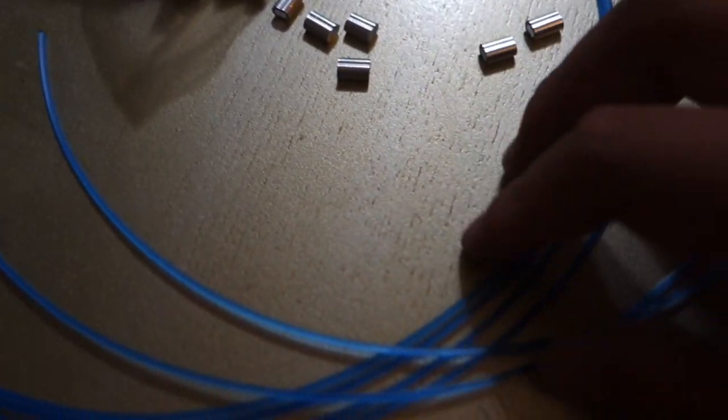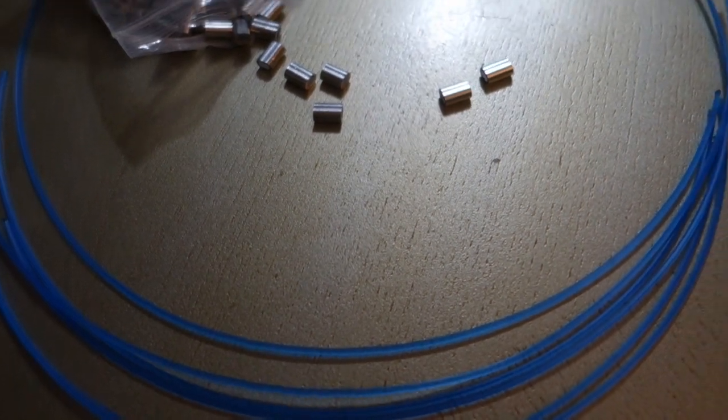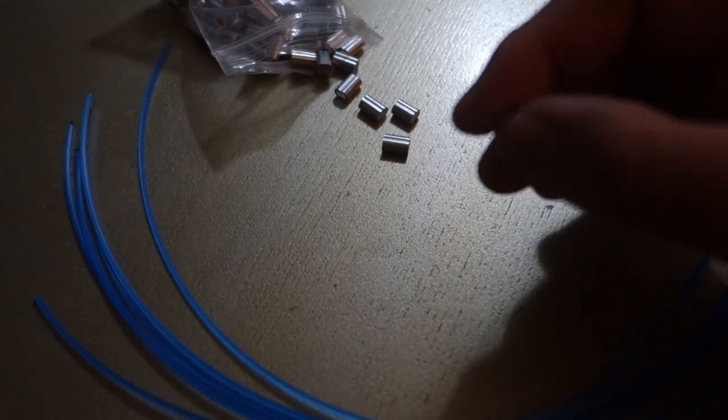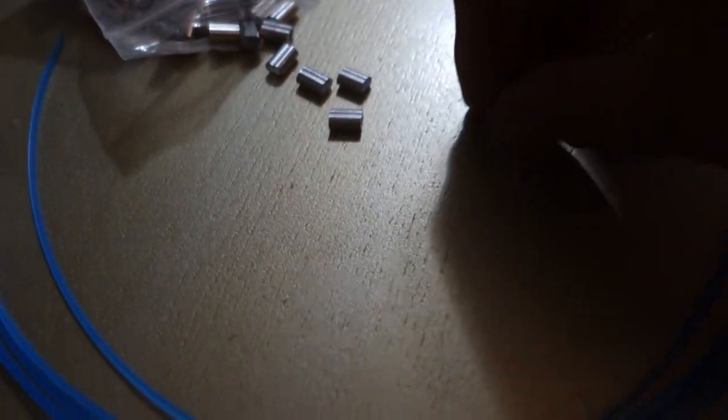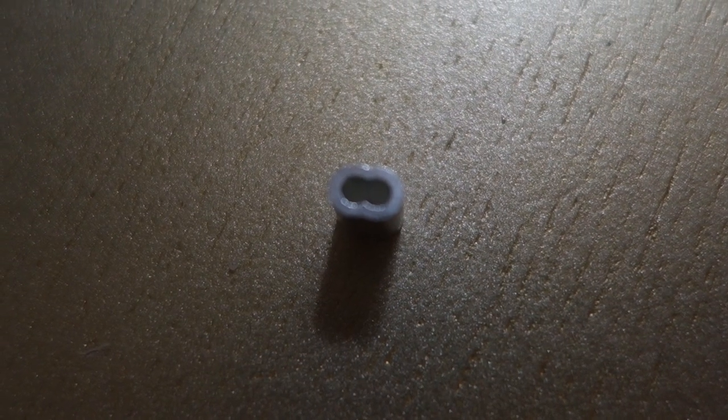So I got six weed whacker line cut into 13 inches each. And also I have these from Amazon. Crimp things. So then you can crimp and it's like metal. You put two loops. I'll have Sheila hold it for me. Hold it for me. Yeah.